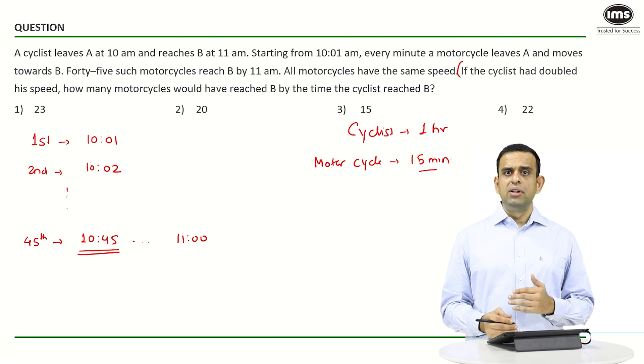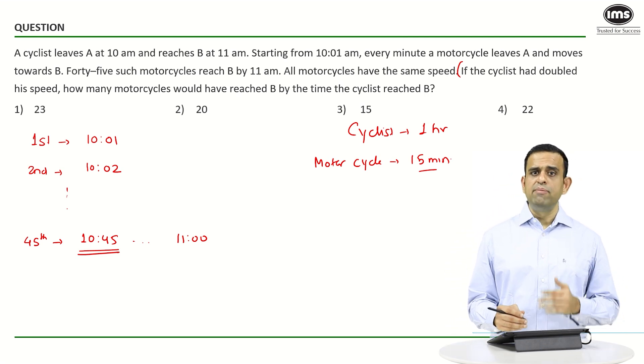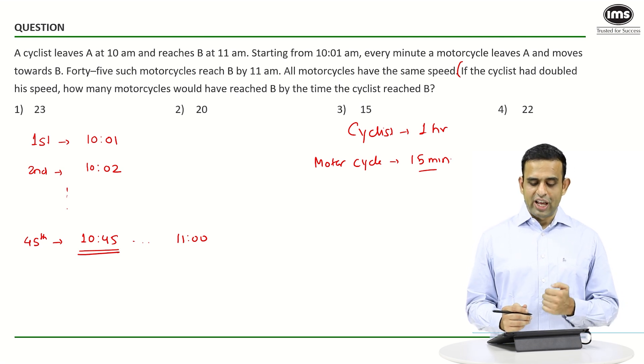Now, if the cyclist had doubled the speed, you can cover the same distance in half the time since speed and time are inversely proportional to each other.